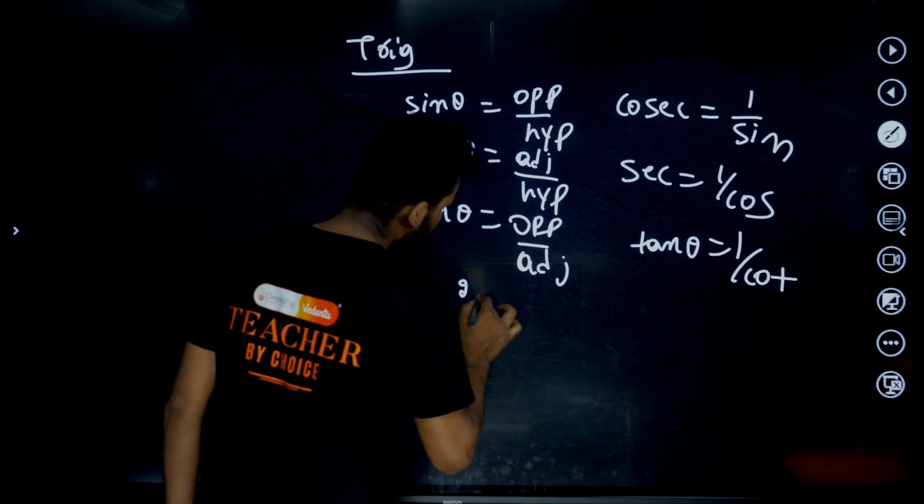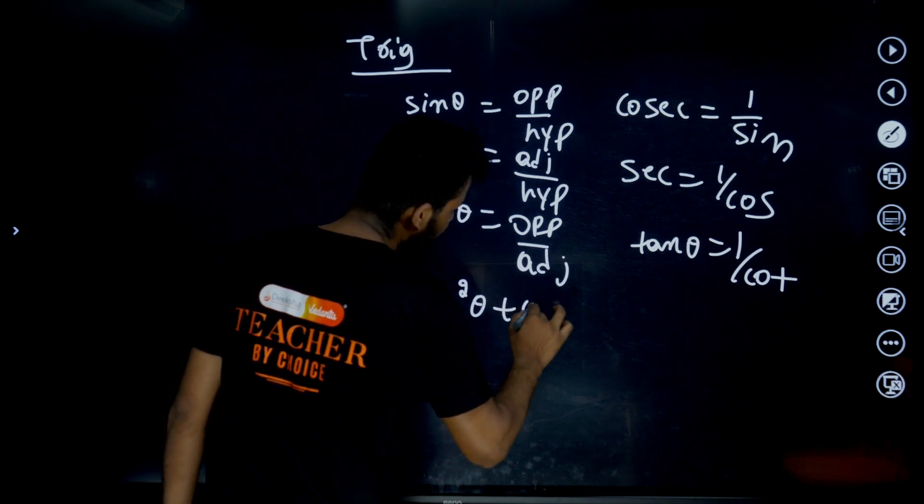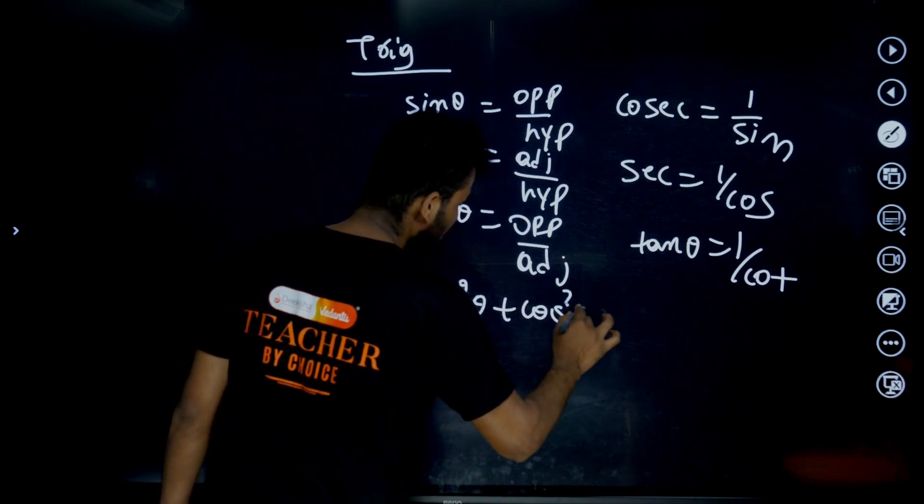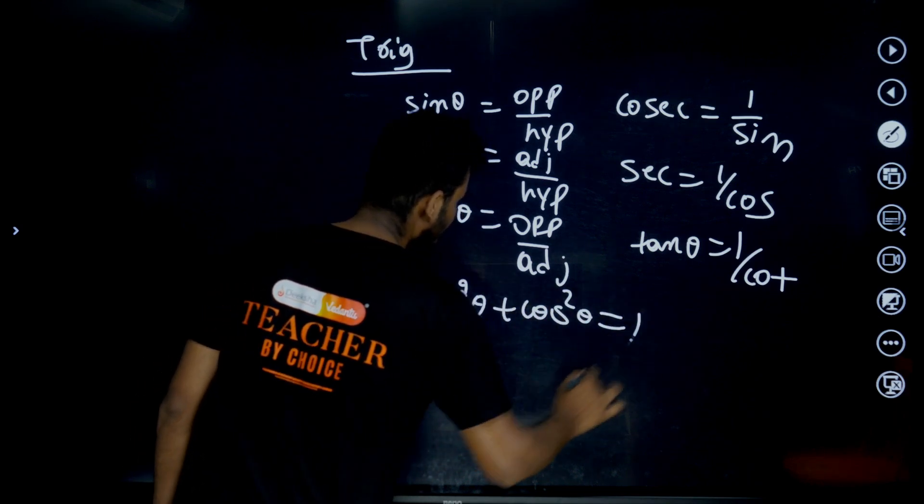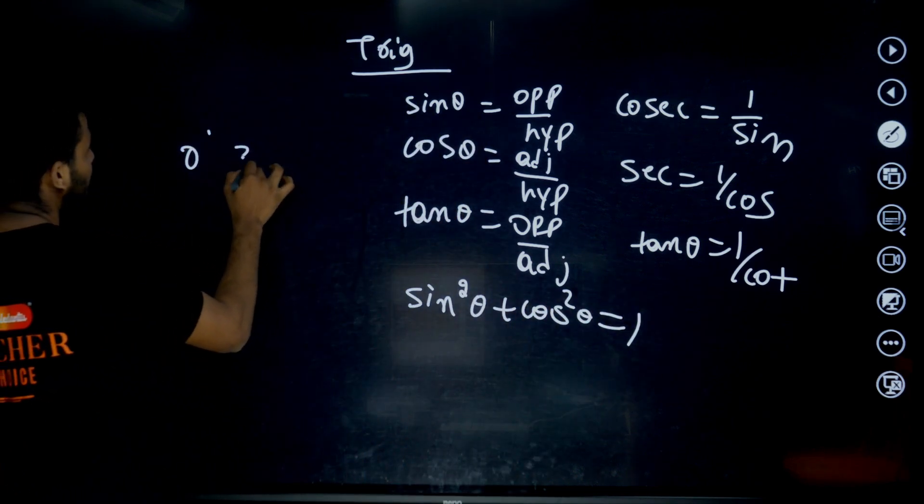The fundamental trigonometric identity: sin²θ + cos²θ = 1. Also remember all six trigonometric ratios for standard angles.